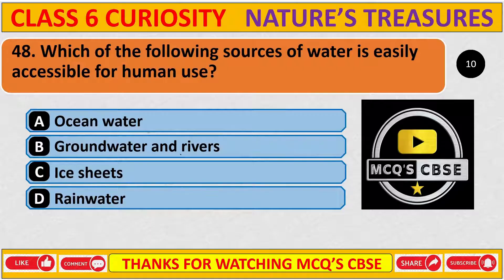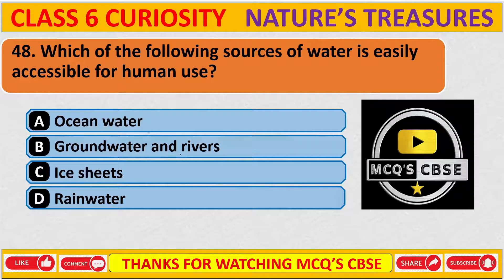Which of the following sources of water is easily accessible for human use? The correct answer is B: Ground water and rivers.